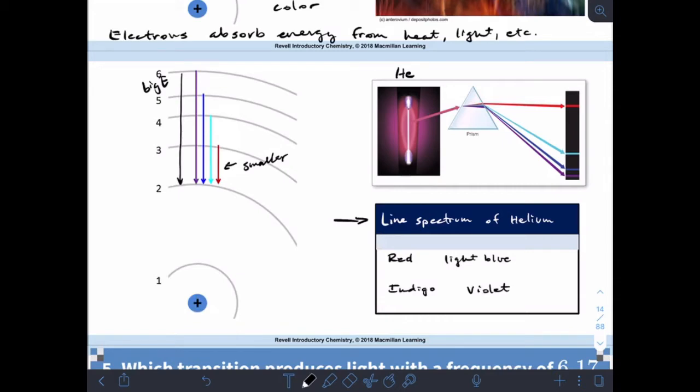It's like a fingerprint for an element. In fact, it's how astronomers know what elements planets out in the universe are made of. We know that Jupiter has a lot of methane because of the line spectrum that we see in the telescopes. They have special telescopes that can see the line spectrum. Helium, for example, has a line spectrum that is red light, indigo light, blue, and violet. It's like a fingerprint for that particular element.